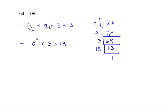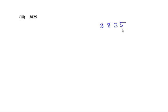Now let us look at the third sub-part: 3825. You can pause the video and try it yourself, then check your answer. Now, 3825 ends with 5, which guarantees it is divisible by 5. Dividing 3825 by 5: 5 times 765 gives us 3825.